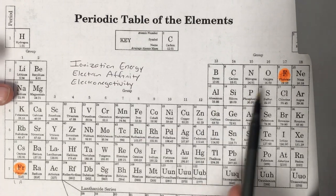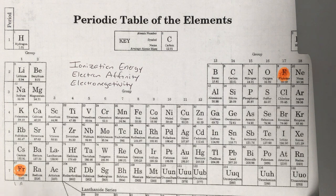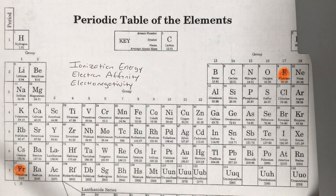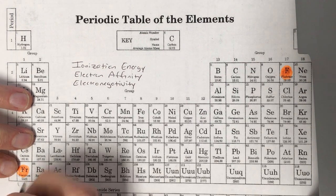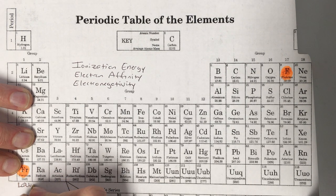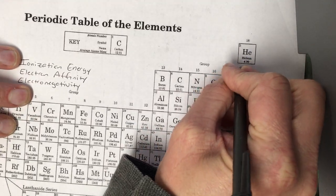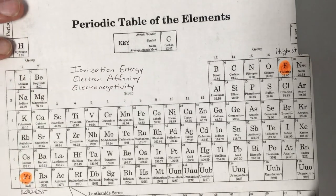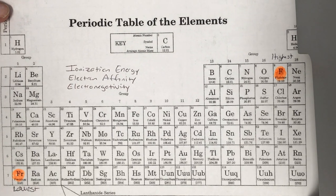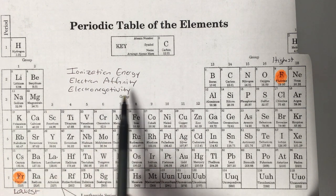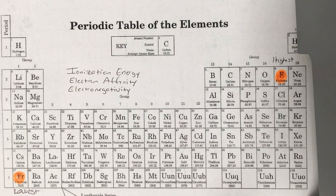What makes these two elements so important is that of all the reactive elements on the periodic table — excluding the noble gases — francium is the lowest in all these things, and fluorine is the highest. Francium has the lowest ionization energy, electron affinity, and electronegativity, whereas fluorine is the highest in all three.